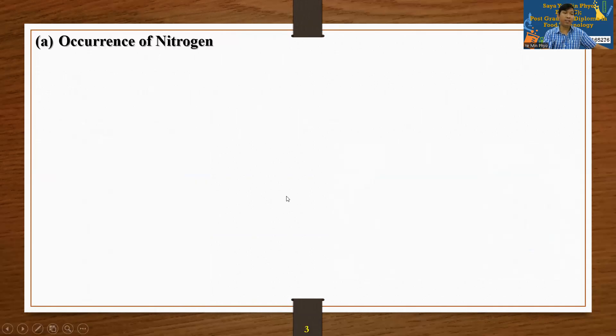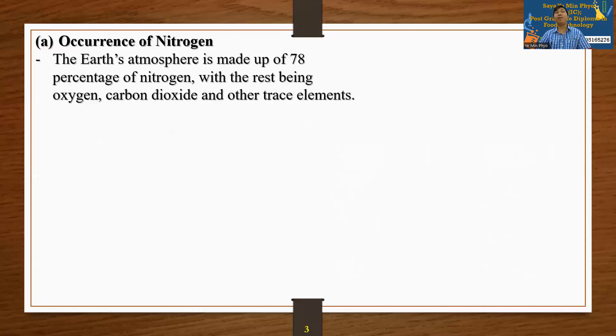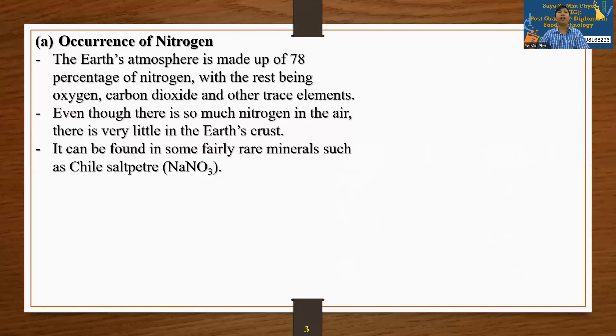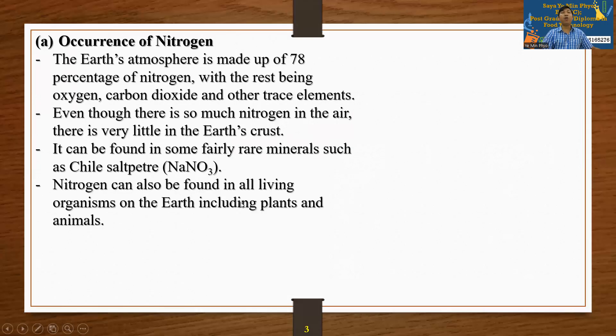The Earth's atmosphere is made up of 78% nitrogen, with the rest being oxygen, carbon dioxide, and other trace elements. Even though there is so much nitrogen in the air, there is very little in the Earth's crust. It can be found in some fairly rare minerals such as Chile saltpeter, NaNO3.